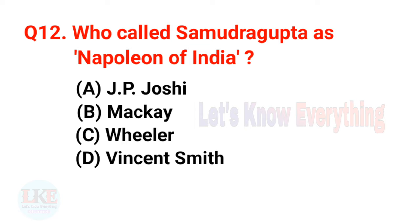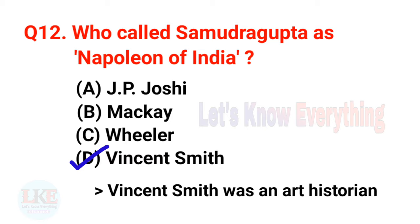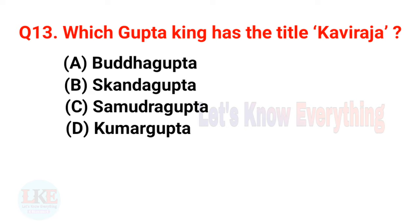Question 12: Who called Samudragupta the Napoleon of India? Right answer: option D — Vincent Smith, who was an art historian. Question 13: Which Gupta king held the title Kavi Raja? Right answer: option C — Samudragupta.